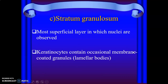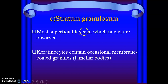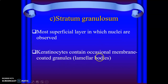'Good small gals like candy' — G is for stratum granulosum. This is the most superficial layer that contains nuclei; remember lucidum and corneum have no nuclei as they are more superficial. The keratinocytes usually have membrane-coated granules, which we call lamellar bodies, in the stratum granulosum.